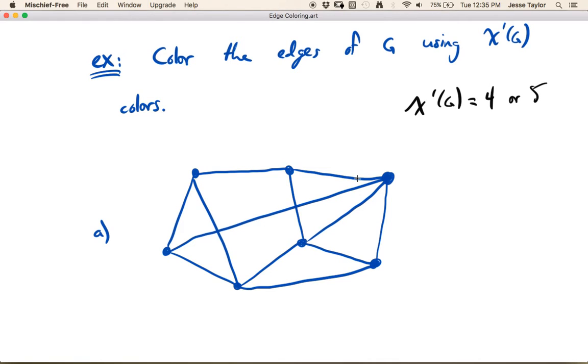We know it's going to take at least four because, for example, all four of these edges have to have different colors, and all four of these edges have to have different colors, all four of these edges have to have different colors, right? Because to be a proper coloring, no two edges that are incident with the same vertex can receive the same color.